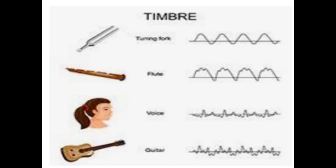Now let us recall what we have learned in this video. The maximum displacement of a vibrating body from its mean position is known as amplitude; its unit is the meter. The loudness of sound is also called its intensity — it depends upon the amplitude and its unit is decibel. The frequency of a sound is the number of vibrations made by its source in one second; its unit is the hertz. The sharpness or dullness of a sound is called its pitch, and it depends upon the frequency. The main frequency of a sound which determines the pitch is called the fundamental frequency. Multiples of the fundamental frequency present in a sound are called overtones. The timbre, tone, or quality of a sound depends on the number and proportion of the overtones present in it.